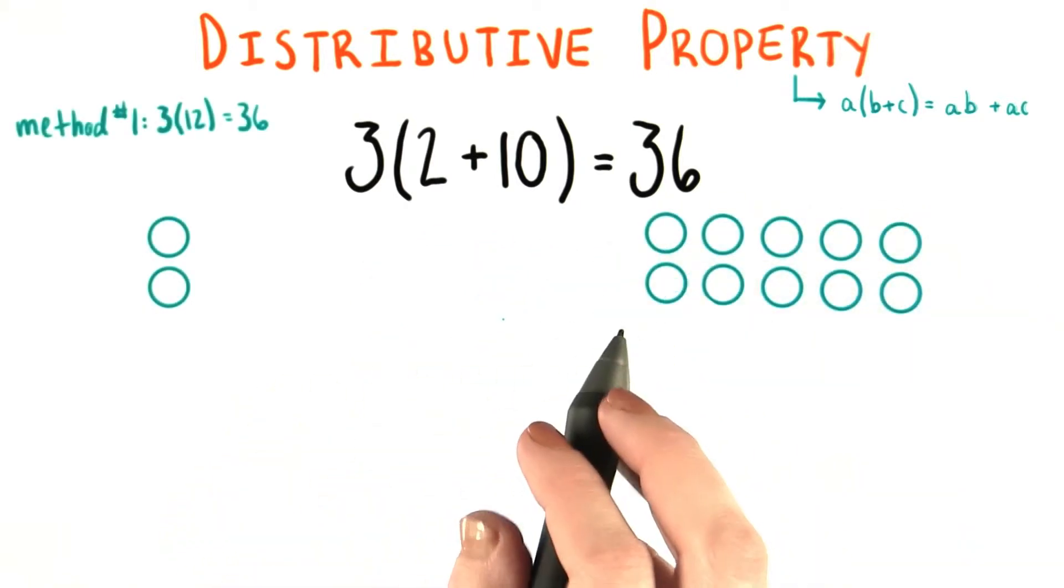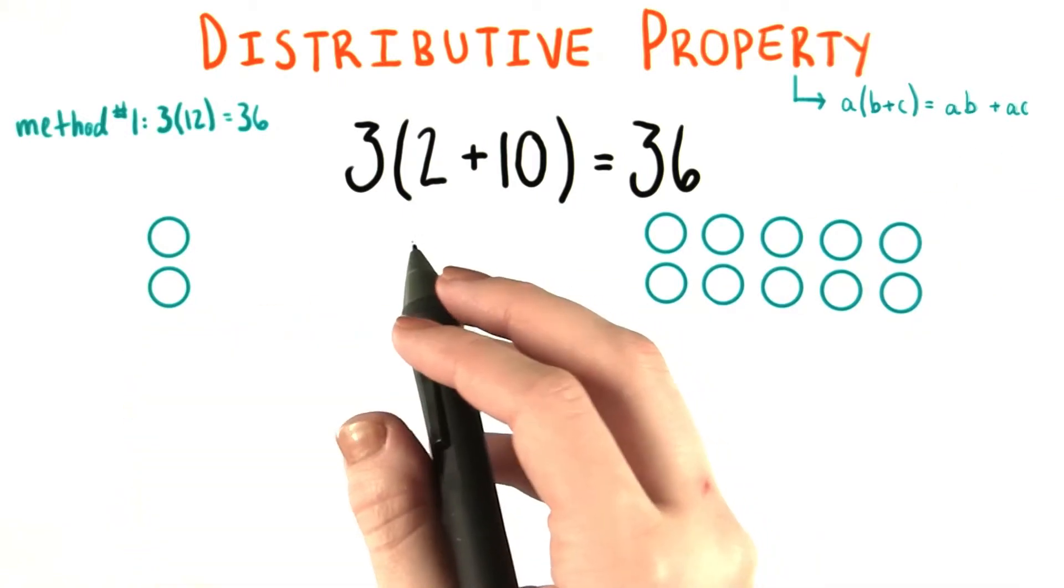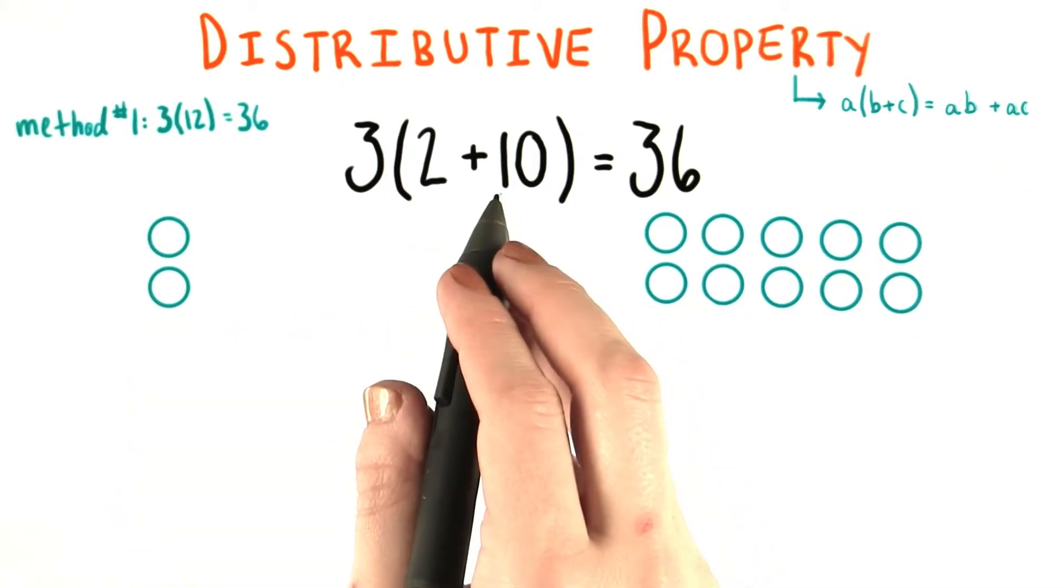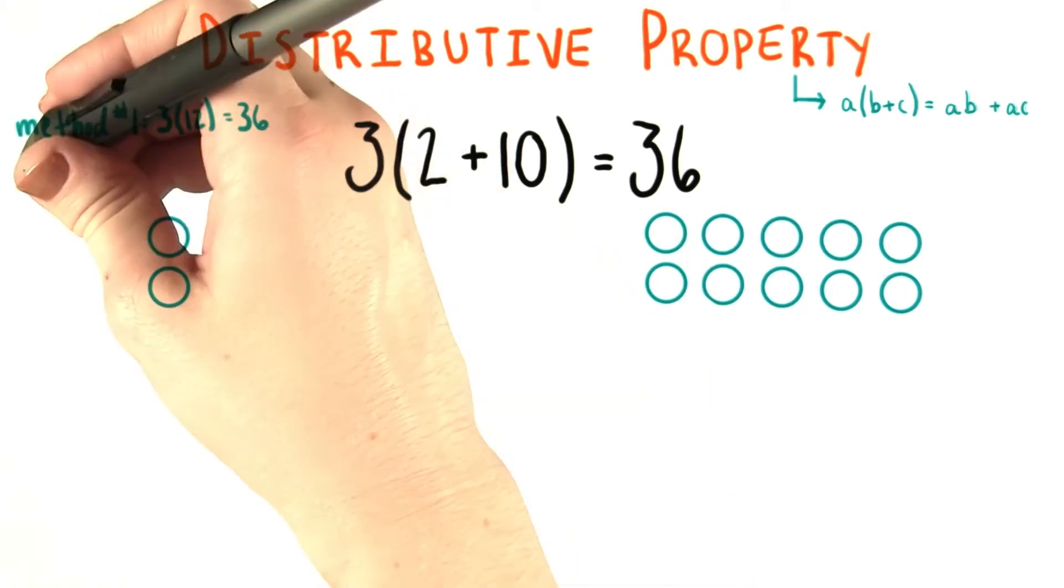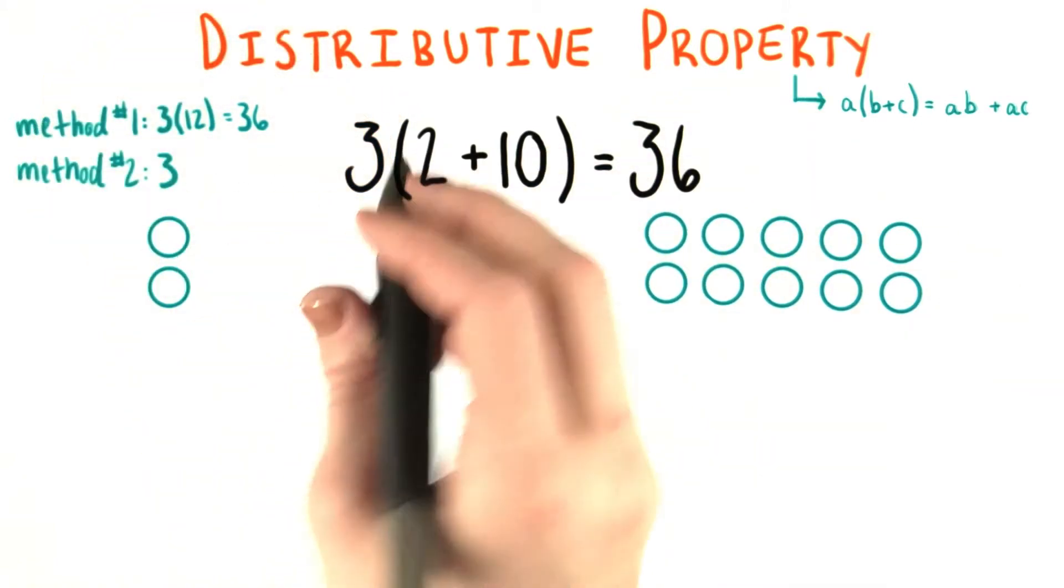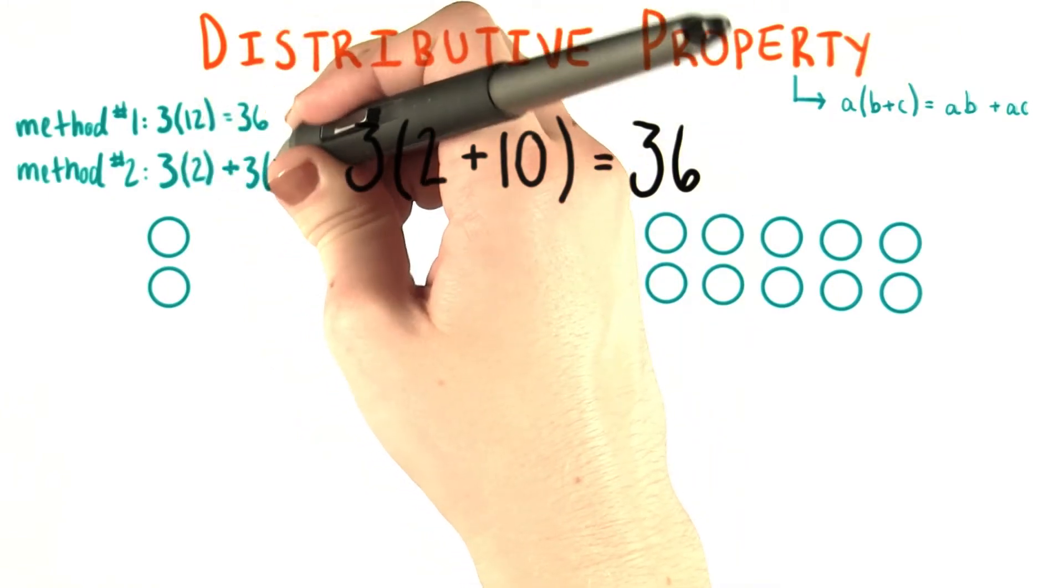However, we also have that second method of solving problems like this, and that's using the distributive property. So if we want to use the distributive property, then the first step is going to be to multiply each of the terms that's inside the parentheses by the 3. So let's write down method 2. First we're going to say 3 times 2, and then we're going to add that to 3 times 10, just like we saw in the last quiz.